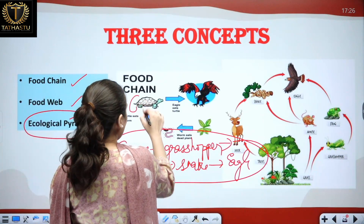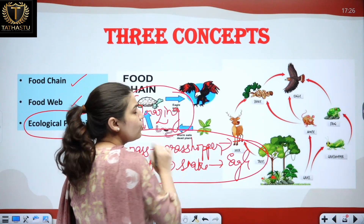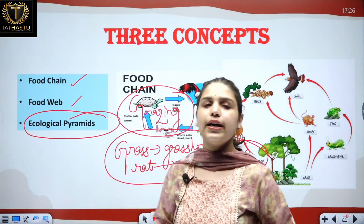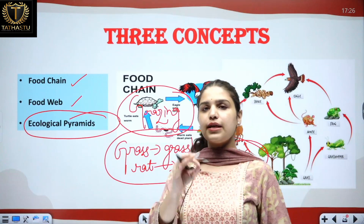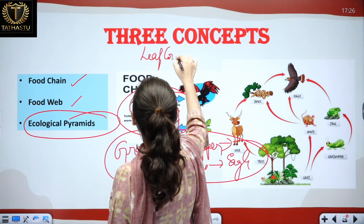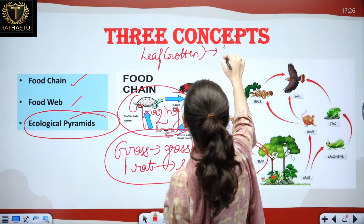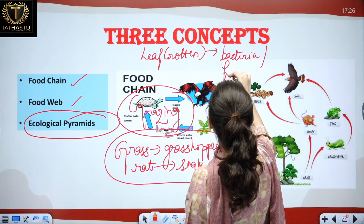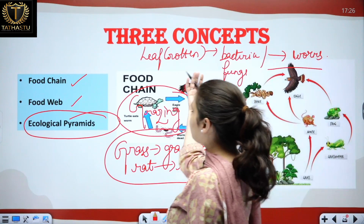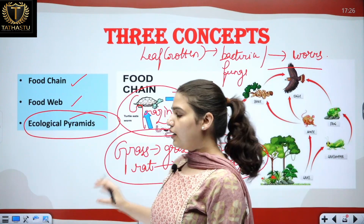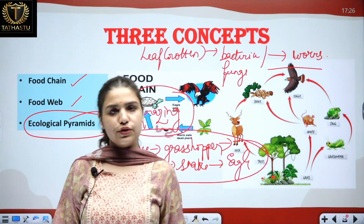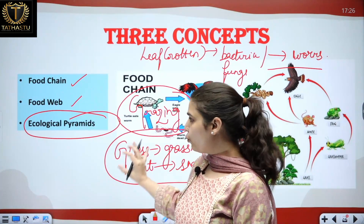This example illustrated a grazing food chain. We also have a detritivore food chain, where organisms feed on dead organic matter — dead plants or dead animals. For example, a decayed or rotten leaf is consumed by certain bacteria or fungi, which are then consumed by earthworms. So at each trophic level, one species is dependent on another for food.